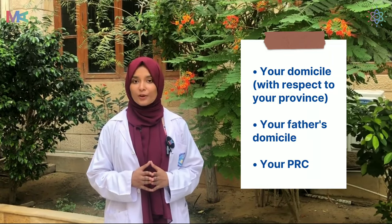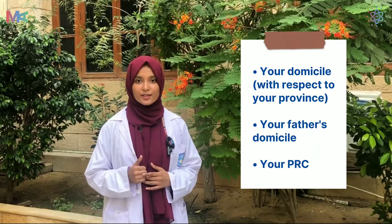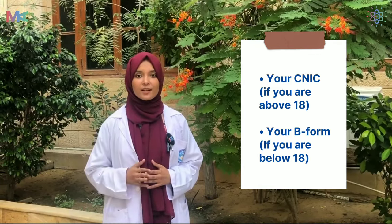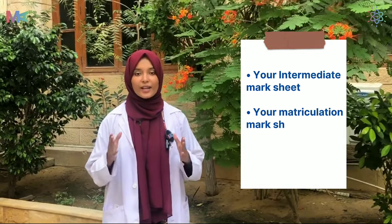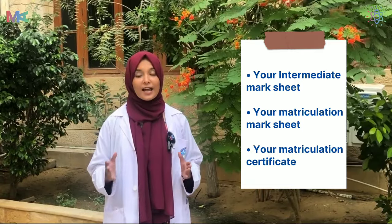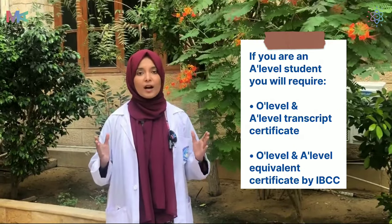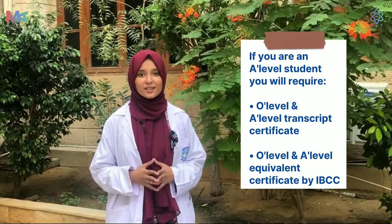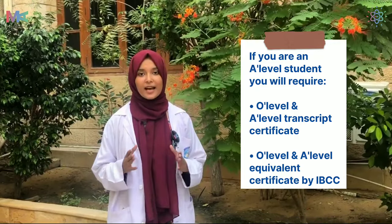Next, what are the documents required for the admission process? Even though all documents are listed in your prospectus, since it is a very time-taking process, I am going to list them all down. First of all, you will require your domicile of your respective province, your father's domicile, your PRC, your CNIC if you are above 18, and your bay form if you are below 18, your inter mark sheet, your matriculation mark sheet, as well as your matriculation certificate. However, if you are an A-level student, you will require your O-level and A-level transcript certificate, and your O-level and A-level equivalent certificate from IBCC.